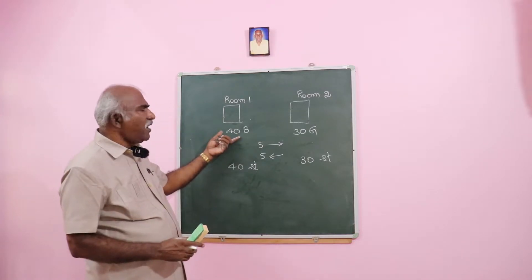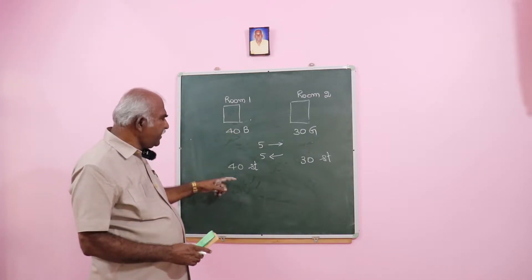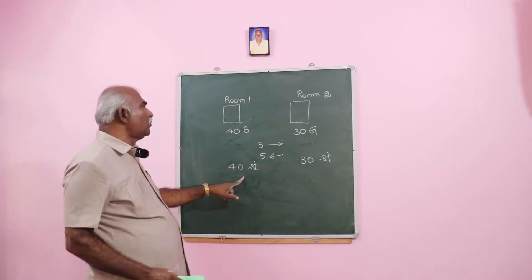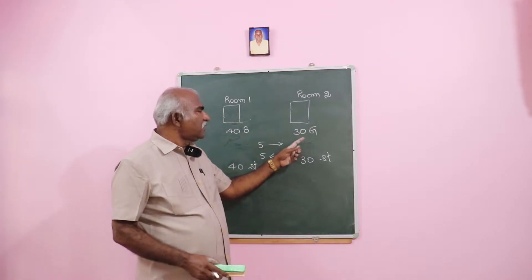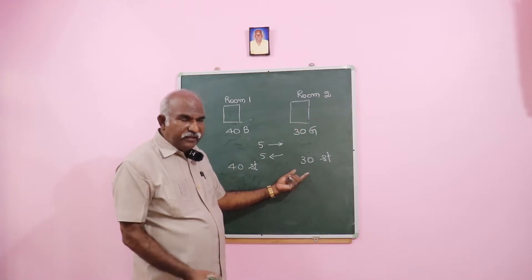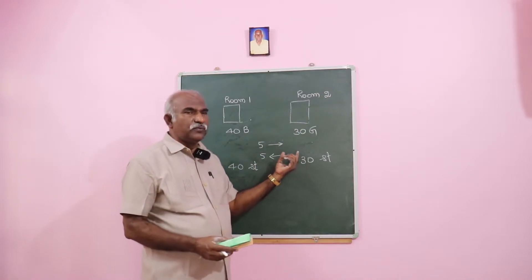In the beginning there are 40 boys in room one. In the end there are 40 students in room one. In the beginning there are 30 girls in room two, and in the end there are 30 students in room two.